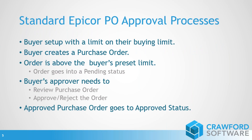How does the standard Epicor PO approval process work? You set up a buyer with a buying limit and assign them an approver. The buyer creates a purchase order and if it's above that limit, it goes into what Epicor calls a pending status. The buyer's approver then goes into the PO approval program, reviews it, and can accept or reject it. The approved purchase order then goes to an approved status — at that point you'd send it to the supplier.